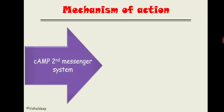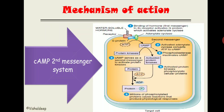Let's get started. First, the mechanism of action: parathyroid hormone uses cyclic AMP as the second messenger system. Parathyroid hormone uses a G-protein coupled receptor, which has two domains — an extracellular domain and an intracellular domain.